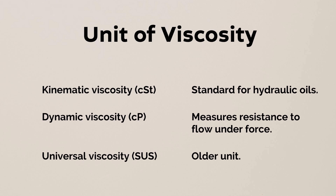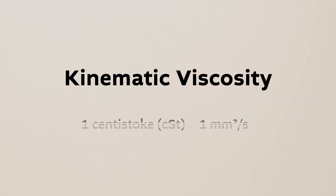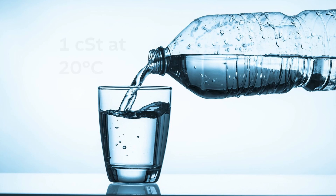Viscosity is measured in three different ways: kinematic viscosity, dynamic viscosity, and universal viscosity. For hydraulic oil we use kinematic viscosity in centistokes. One centistoke equals 1 mm² per second in metric units. For reference, water has a viscosity of 1 centistoke at 20 degrees centigrade.